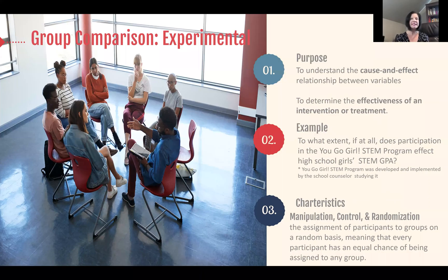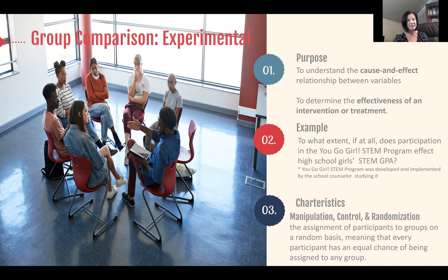Another type of group comparison design is what's called a true experimental design. Experimental designs are considered the gold standard in research practices — the most rigorous form of experimental design because they control for most threats to internal validity. Unfortunately, they're often difficult and expensive to carry out. The purpose of a true experimental design is to examine the cause and effect relationship between variables in the most rigorous manner possible, to determine the effectiveness of an intervention or treatment.